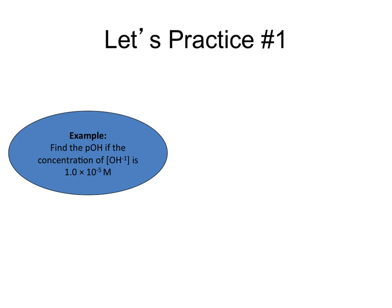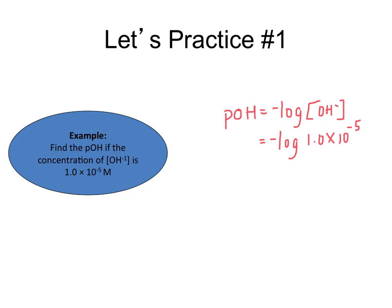Let's look at this example: find the pOH if the concentration of the hydroxide ion is 1 times 10 to the negative 5th. We know that pOH is equal to the negative log of the hydroxide ion concentration. Substituting that number in and using the calculator — press negative, press log, type in 1e negative 5 — you'll get 5.00 as your answer. Remember that however many sig figs you have in your concentration, that's how many digits you express to the right of the decimal point when working with logarithms.